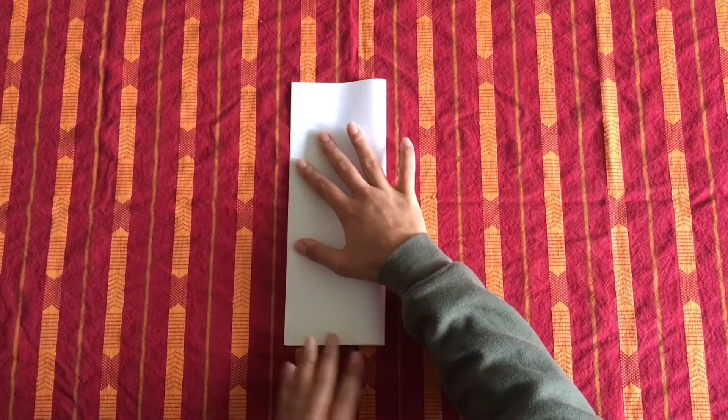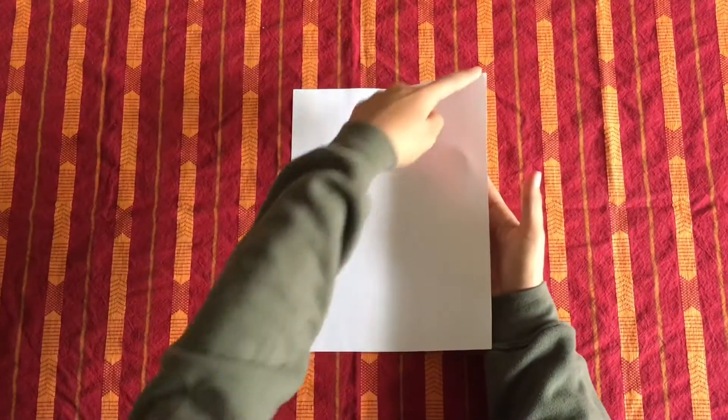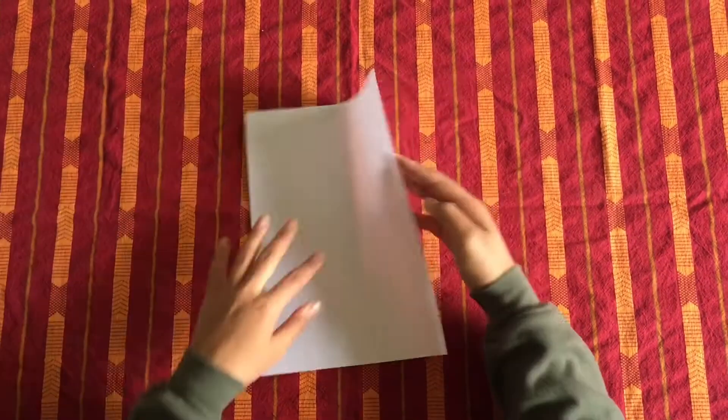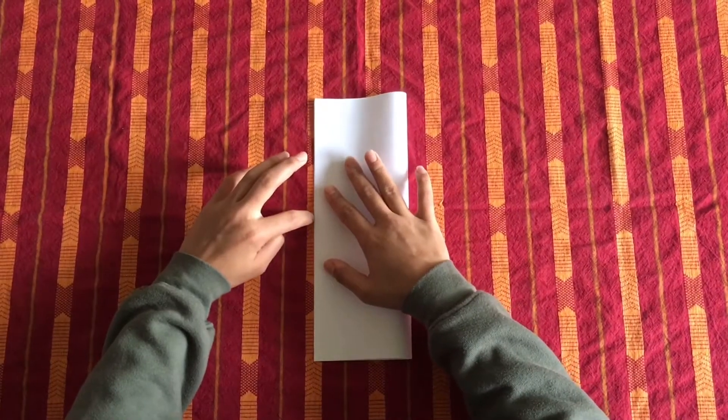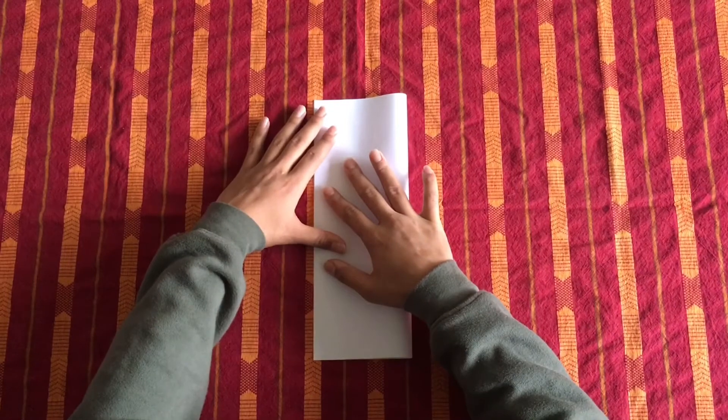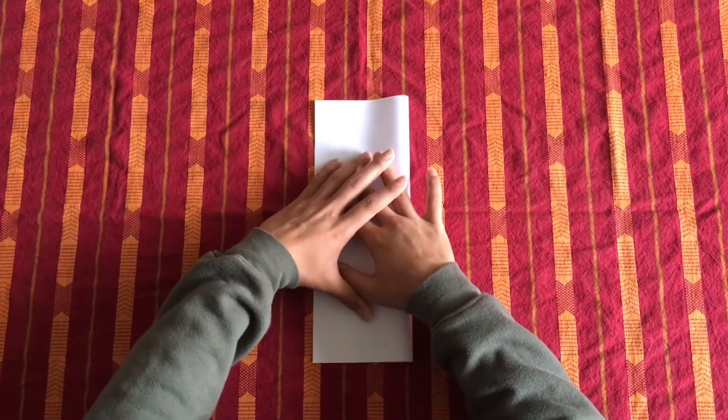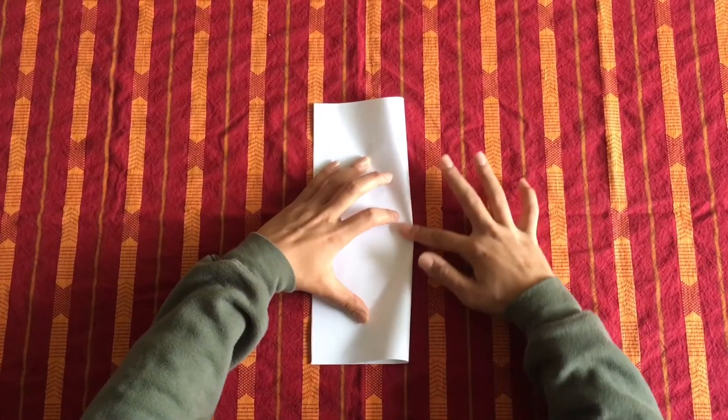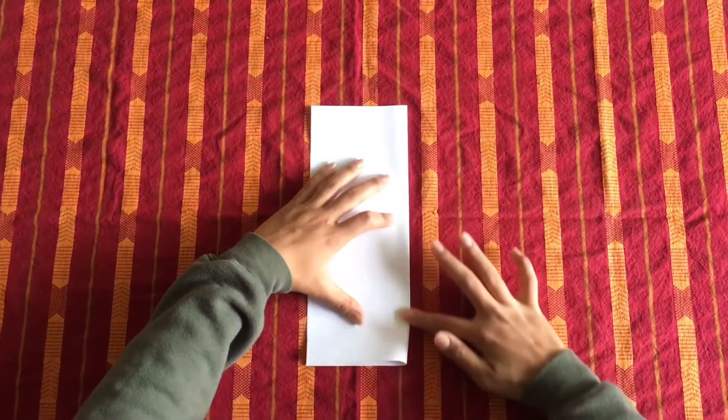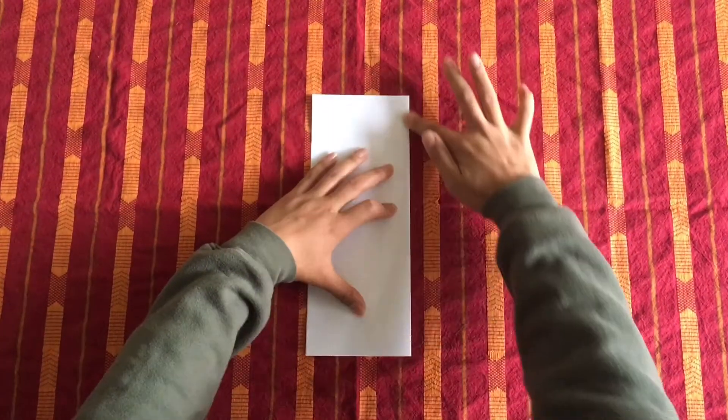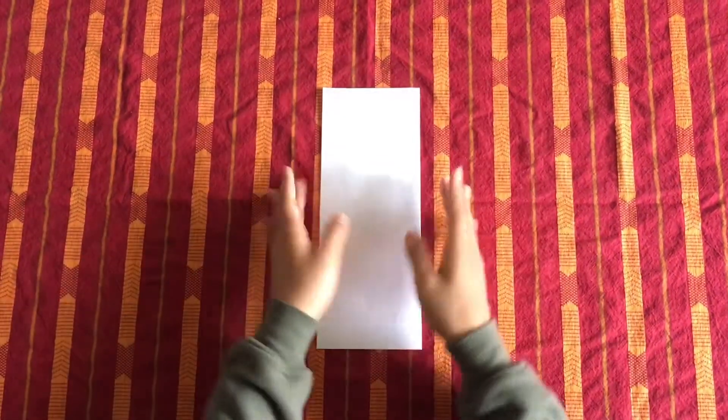You want to try to meet these corners, as close as you can. Once you have those corners matched up, go ahead and fold the paper on the other side.